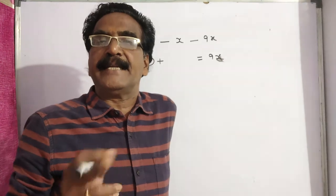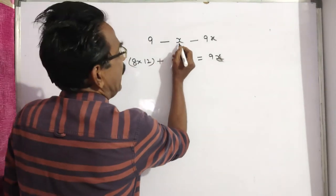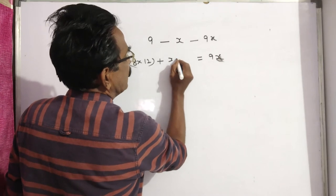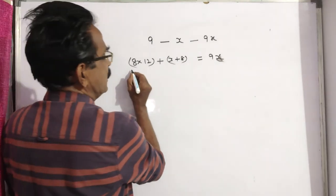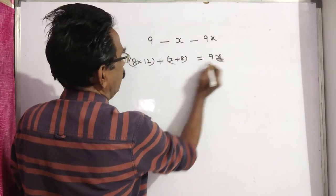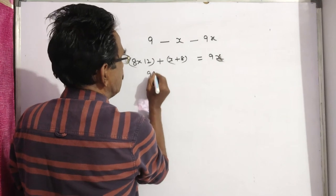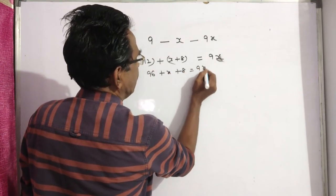The 9th person spent 8 rupees more than the average of all the 9. So, average of all 9 is x, so he spent 8 rupees more than the average. So, 96 plus x plus 8 is equal to 9x.